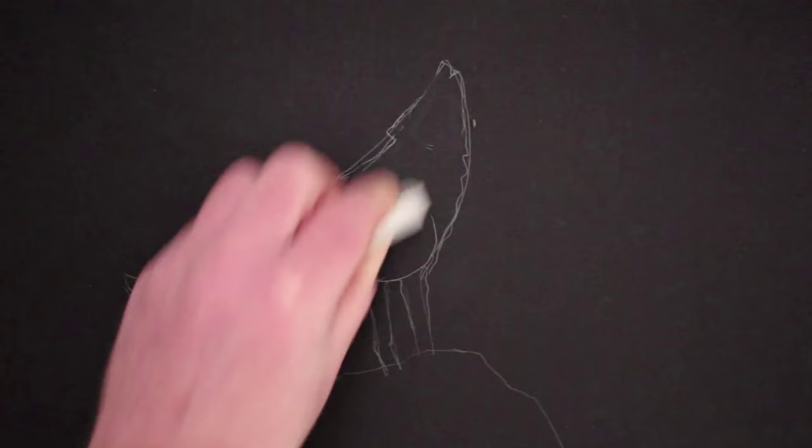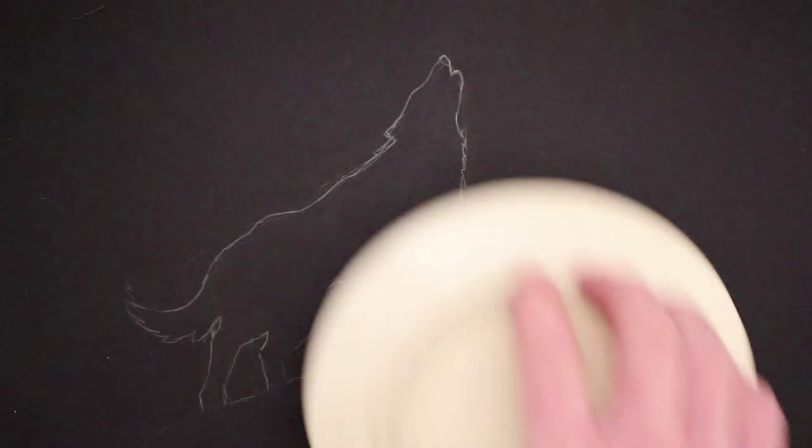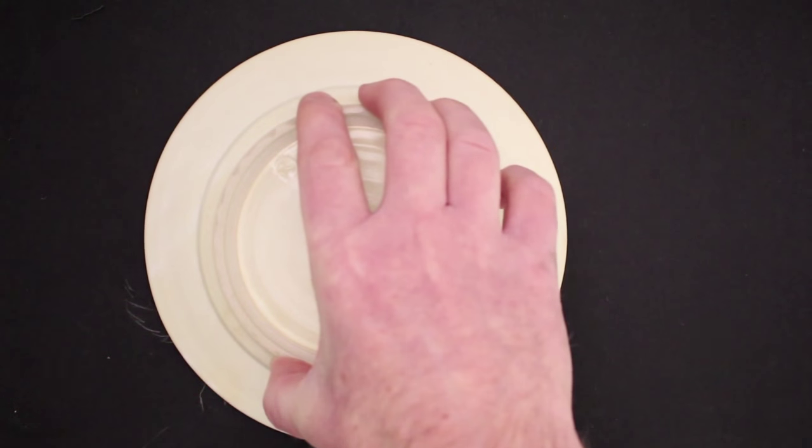So that you've got an outline so that we can draw more things in a moment. And so the next step is to get something that you can draw a circle around, maybe a plate or something like that. Draw a circle around and that can be the moon, that will be the moon.